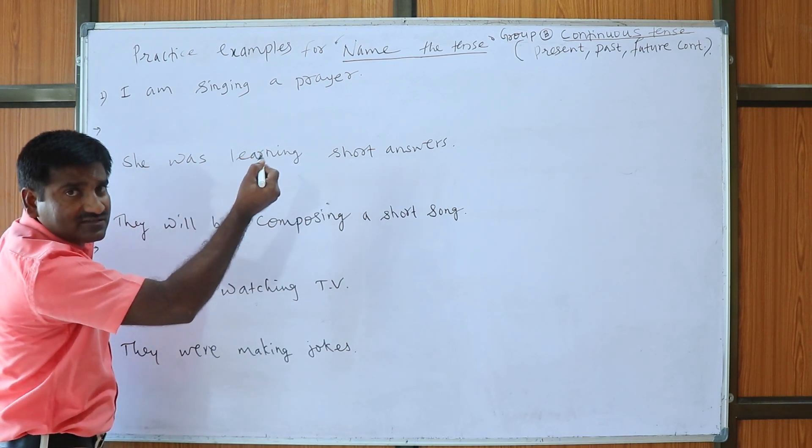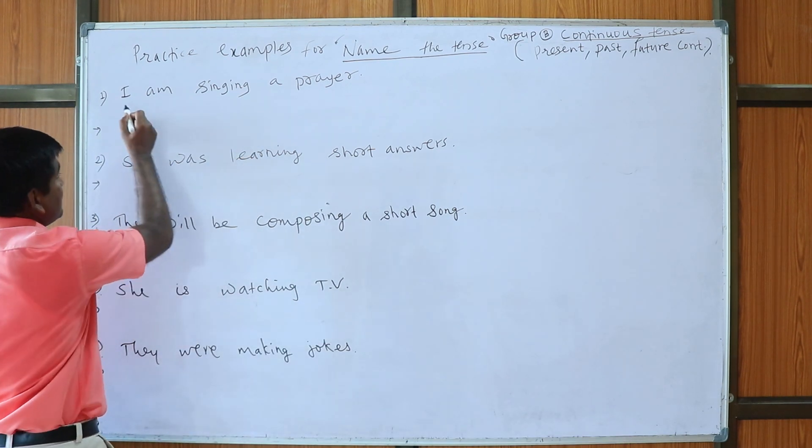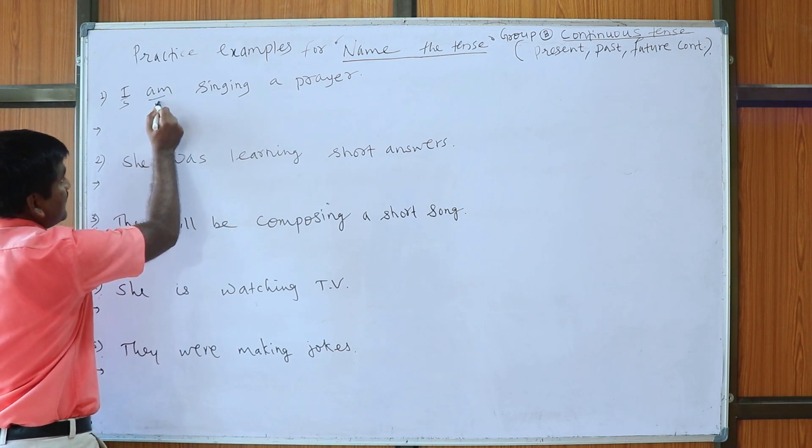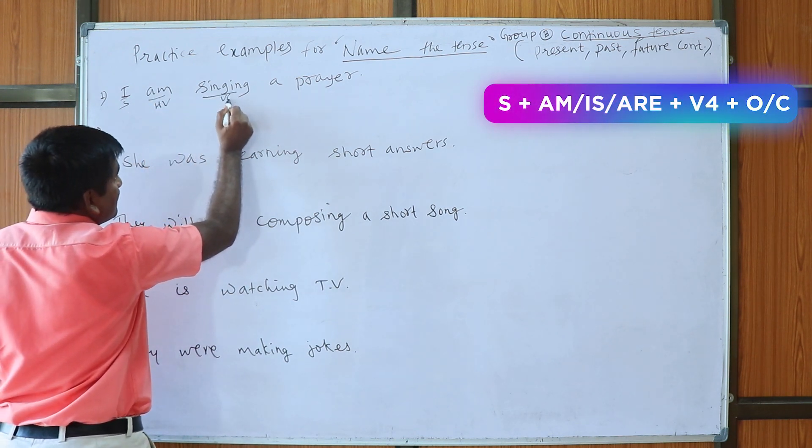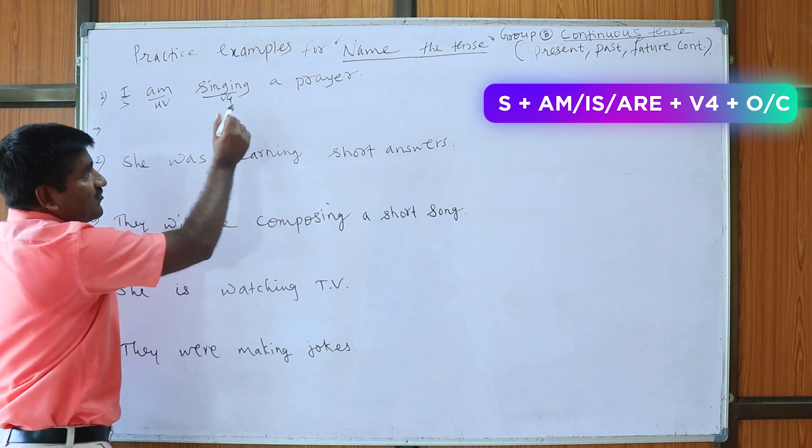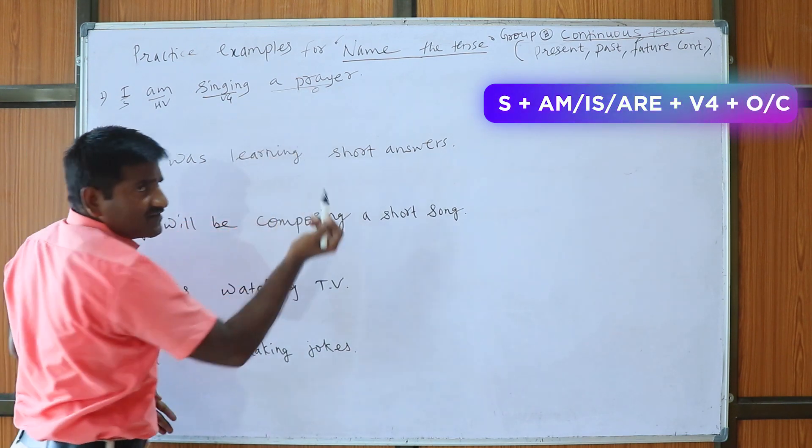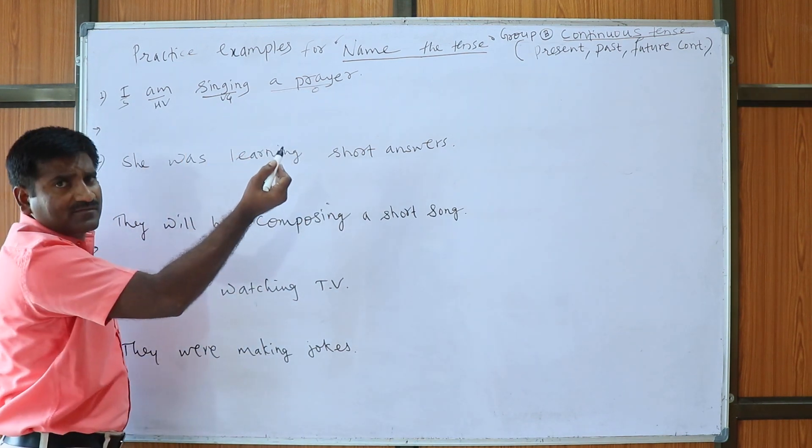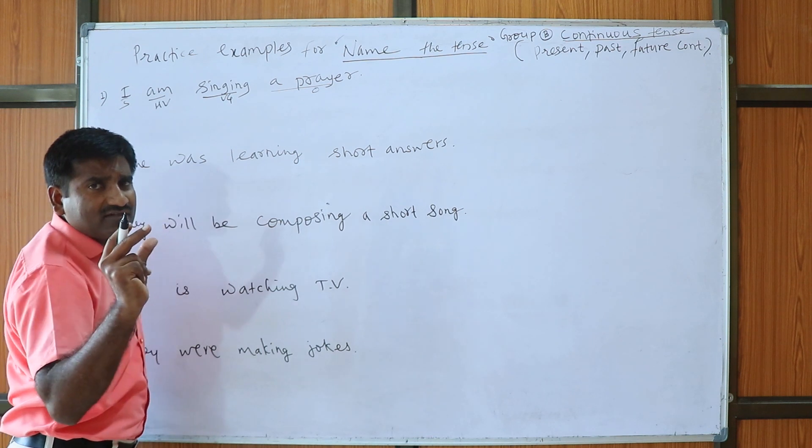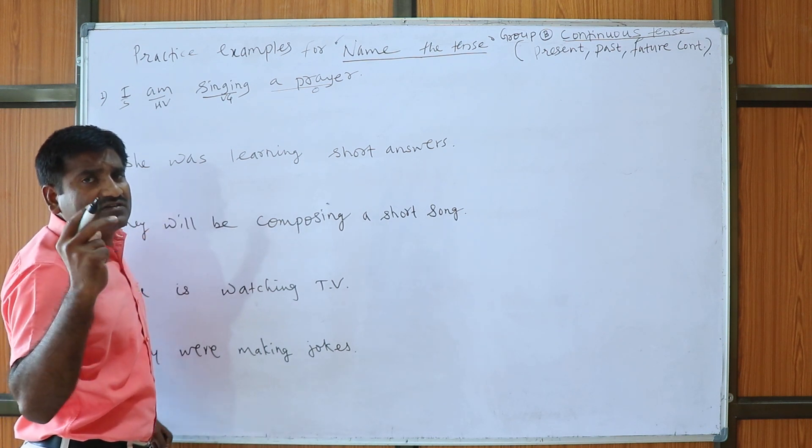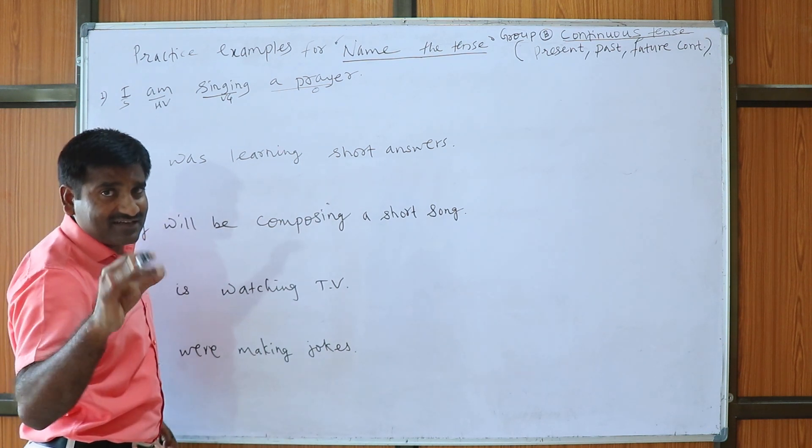So let us start the operation of the sentence. What is the operation here? This is I, this is helping verb and this is V4. So Am/Is/Are plus V4 and the prayer is called as object. Am/Is/Are plus V4. This is the shortcut of the formula of the tense that is present continuous tense.